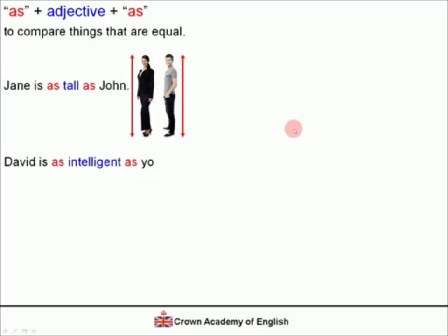Another example: David is as intelligent as you. This means that the intelligence of David is the same level as your intelligence.